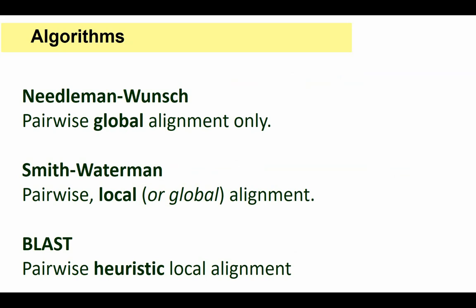Just one word about the algorithms. Needleman-Wunsch (NW) is for global alignment only. Smith-Waterman, which builds on this, handles both global and local. BLAST, which is heuristic, is the most common one. NW and Smith-Waterman give perfect, deterministic results — you run them 100 times and get the same answer. BLAST is heuristic, so you don't always get the best result. You lose something by running BLAST — just worth mentioning.